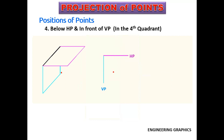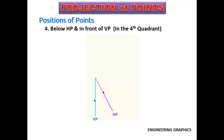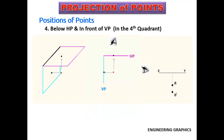In the fourth case, the point is below HP and in front of VP — that is, in the fourth quadrant. Elevation falls on VP and plan falls on HP. When HP is turned, the plan will go below the intersection line of planes. Elevation is A-dash and plan is A. Both the elevation and plan are below the XY line.